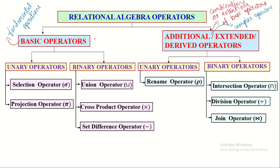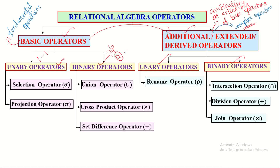Relational algebra operators can be classified into two types: basic operators and additional (also called extended or derived) operators. Basic operators are useful for performing fundamental operations, whereas additional operators are used for performing complex operations and are formulated by combining or extending the basic operators. Both types are further classified into unary operators, which take a single table as input and produce a single table as output, and binary operators, which take two tables as input and produce a single table as output.